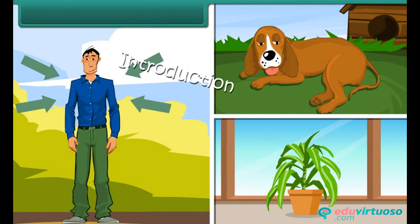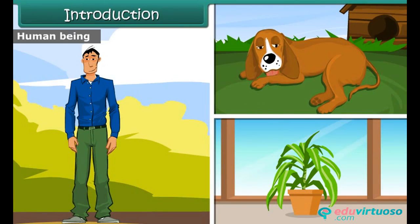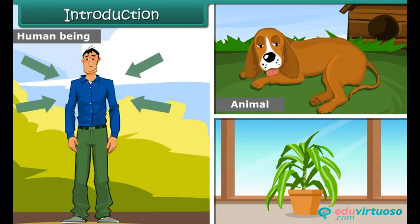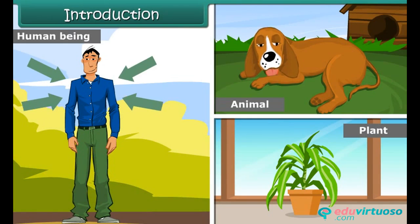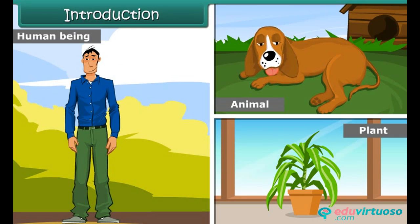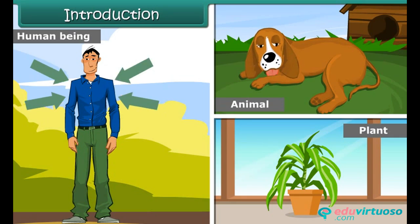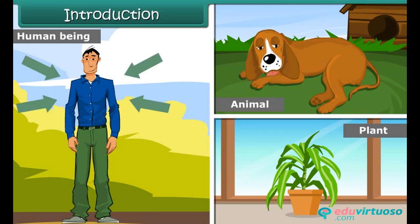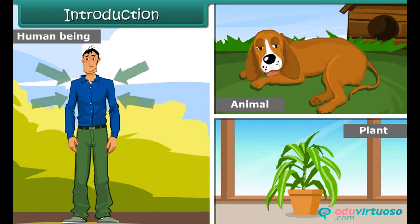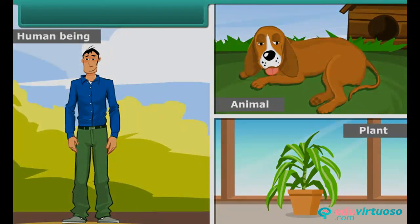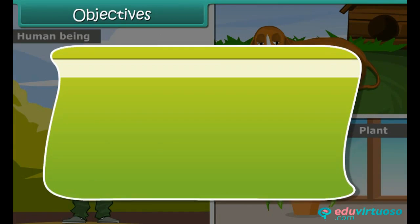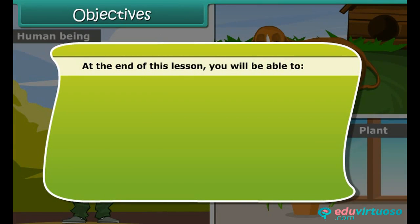Introduction: Human beings, animals, and plants depend on oxygen to survive. While some animals resemble human beings in their techniques of respiration, some others have completely different respiratory mechanisms. Plants also have a unique way of breathing. In this lesson, we will study respiration in plants and animals in detail.